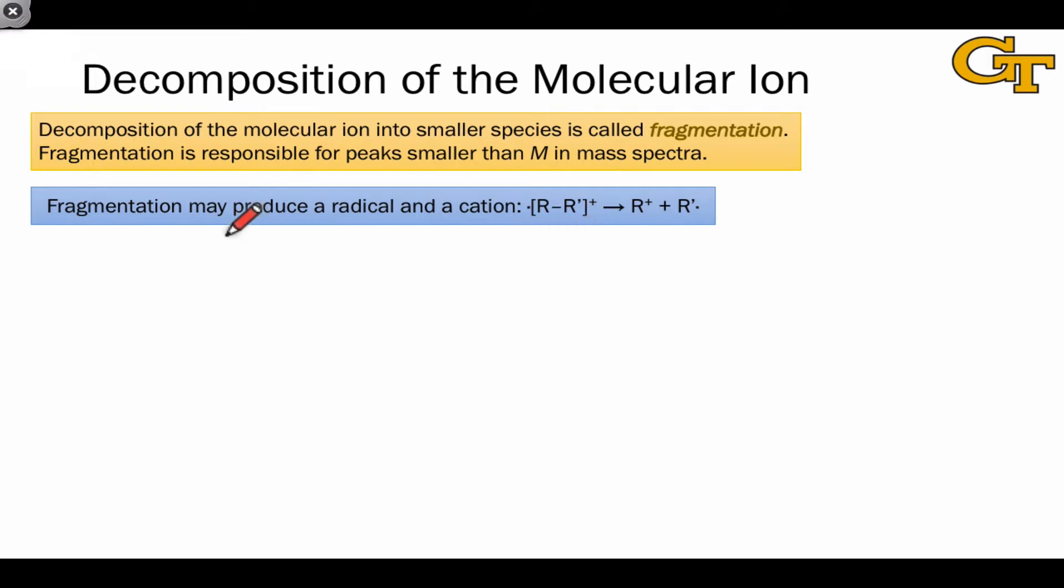In the first class, fragmentation produces a radical and a cation. The radical is a neutral species, R' dot here, and the cation is a positively charged species.